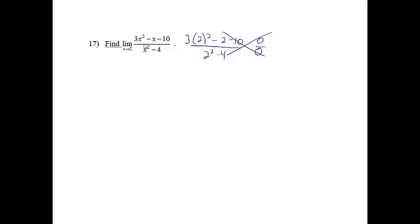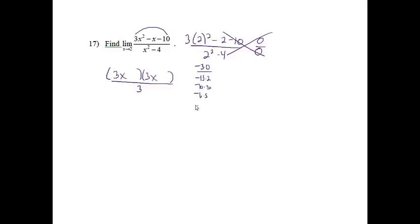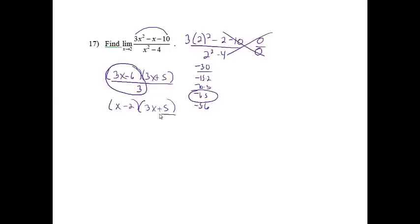The next plan is to factor. I'm going to factor the numerator using the magic number trick. I multiply 3 by negative 10 to get negative 30, then look for two numbers that multiply to negative 30 and add to negative 1 — that's negative 6 and 5. I then divide out the extra 3, giving me x minus 2 times 3x plus 5 in the numerator.